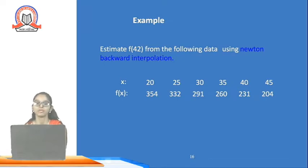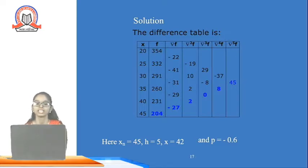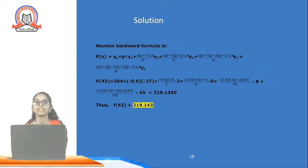Newton's backward interpolation example: solve using the same method, but compute the backward differences — nabla, nabla², nabla³, nabla⁴, and nabla⁵. Here xₙ = 45 (take the last x value), h = 5, and x = 42, giving p = −0.6. Substitute into the backward formula: yₙ + p·∇yₙ + [p(p+1)/2!]·∇²yₙ, up to ∇⁵yₙ. The result is f(42) = 219.143.